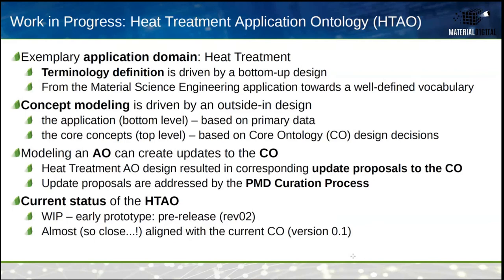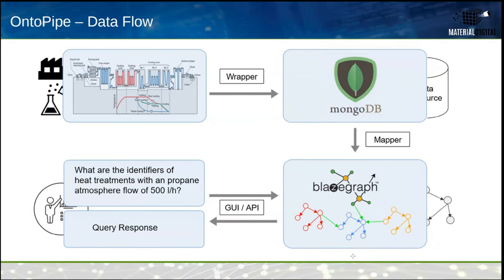Now, all those dry slides aside, we come to the actual meat of the thing. Heat treatment is illustrated by a steel sheet manufacturer mill. We get data from there using a task called wrapping — essentially collecting — creating a new unified intermediate format. The mapper, which is domain-specific and knows all the terms from the heat treatment domain, can then store them into a triple store — we are using BlazGraph. Machines or humans can then use the GUI or APIs to get information from the graph database.